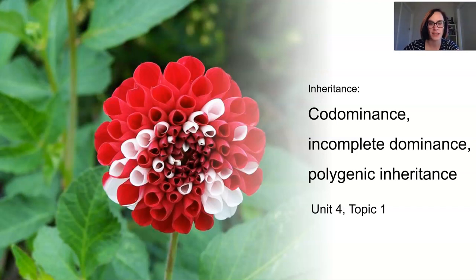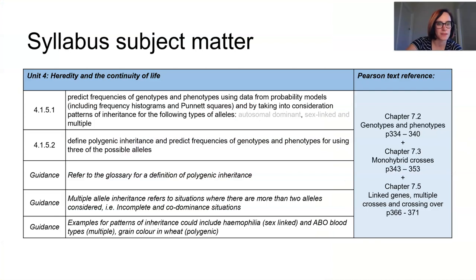In this lesson, we're looking at other kinds of inheritance: codominance, incomplete dominance, and polygenic inheritance. We're specifically looking at the multiple alleles types of inheritance.